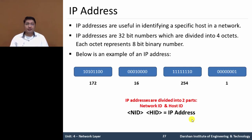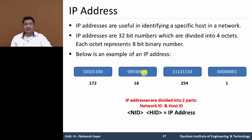IP Addresses are 32-bit numbers which are divided into 4 octets — 8 multiplied by 4, total 32 bits. Each octet represents an 8-bit binary number. For example, 10101100 denotes in decimal 172, and 00010000 denotes in decimal 16. So this 4-part octet 172.16.254.1 is an IP Address.